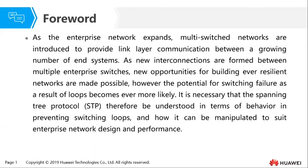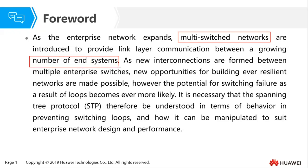As the enterprise network expands, multi-switched networks are introduced to provide link layer communication between a growing number of end systems. You can think of it as introducing different layers — the access layer, the aggregation layer, and the core layer. That is what we are calling a multi-switched layer, with many switches at different layers to support the growing number of end systems.